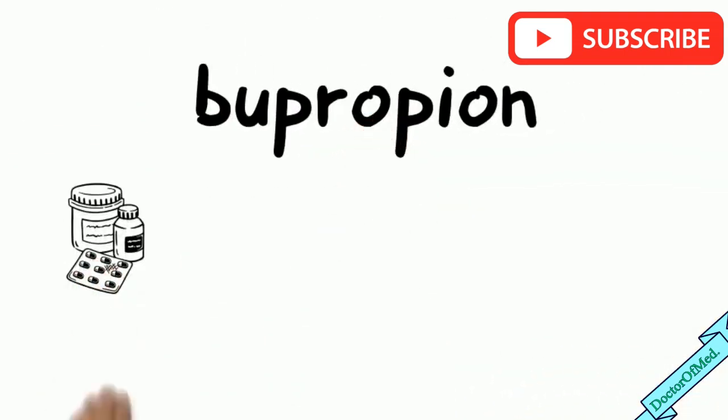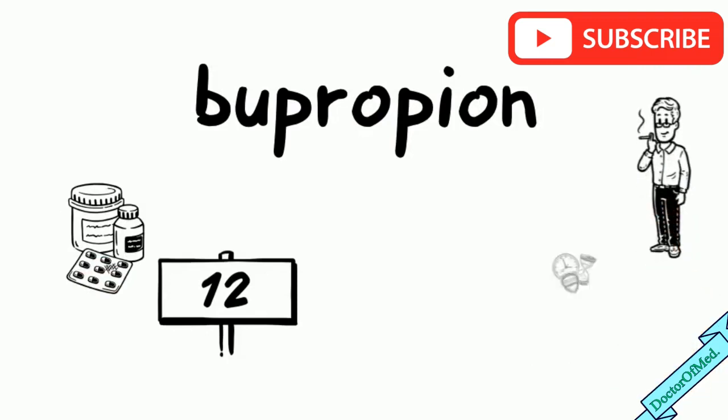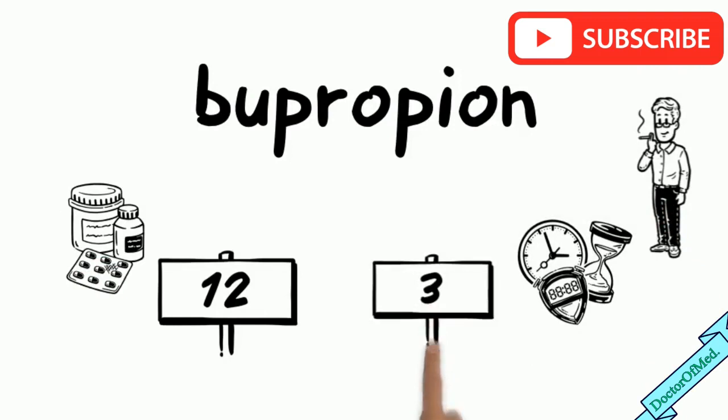Bupropion is taken in tablet form for 12 weeks, but if you have successfully quit smoking in that time, you can use it for a further 3 to 6 months to reduce risk of smoking relapse.